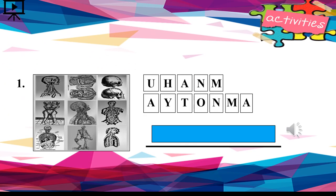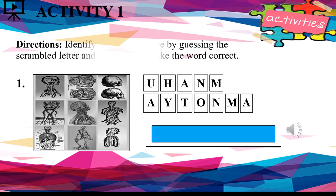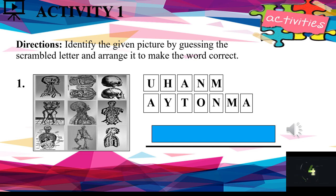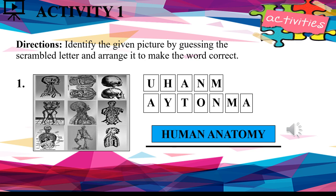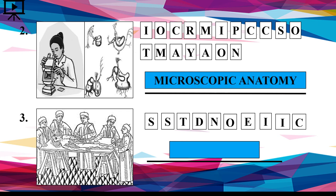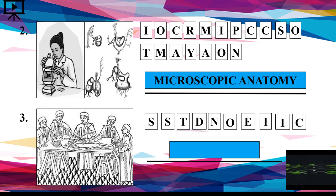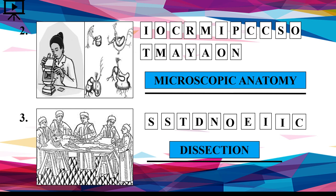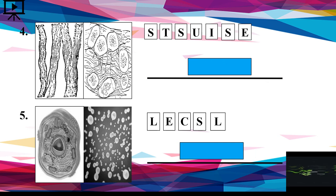Did you learn something? Let's test your knowledge with Activity Number 1. Directions: Identify the given picture by guessing the scrambled letters and arrange them to make the correct word. I'll give you 5 seconds to answer. Number 1: Human anatomy. Number 2: Microscopic anatomy. Number 3: Dissection. Number 4: Tissues. Number 5: Cells.